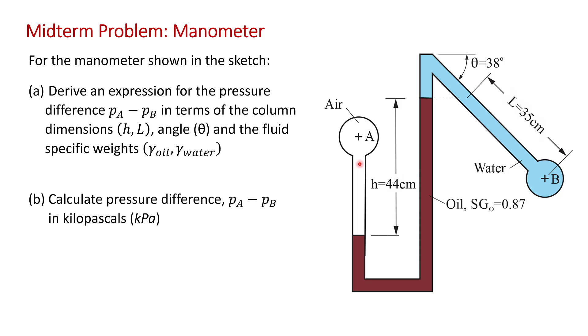The problem asks: for the manometer shown in the sketch, derive an expression for the pressure difference pA minus pB in terms of the column dimensions h and l, the inclination angle theta, and the fluid specific weights gamma of oil and gamma of water. And for part b, you're asked to calculate the pressure difference pA minus pB in kilopascals using the values given in the problem.